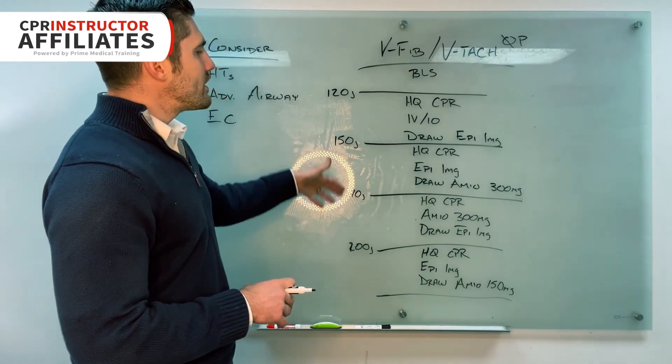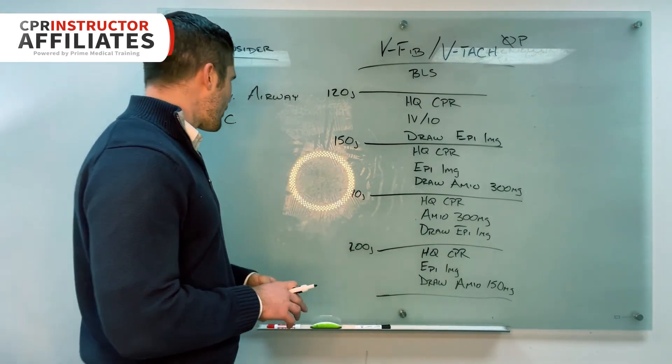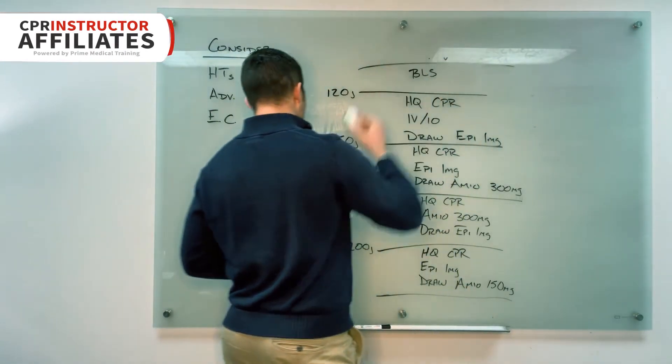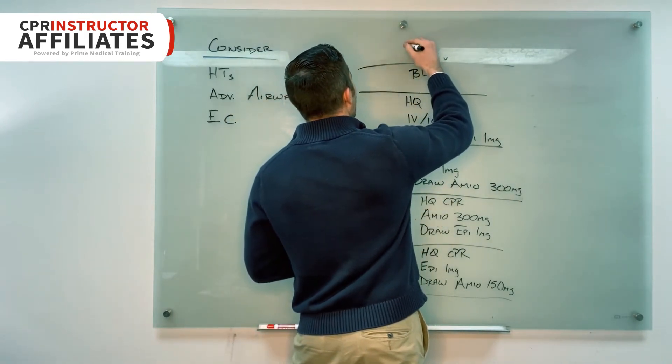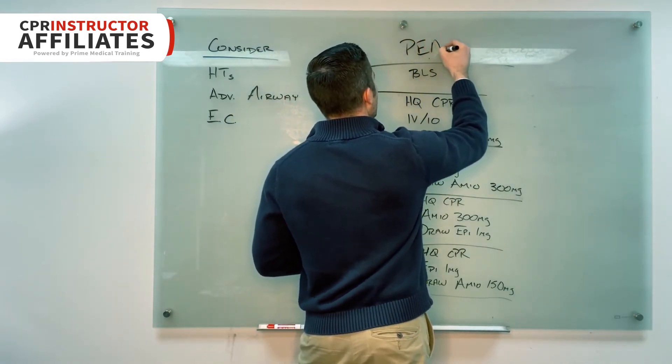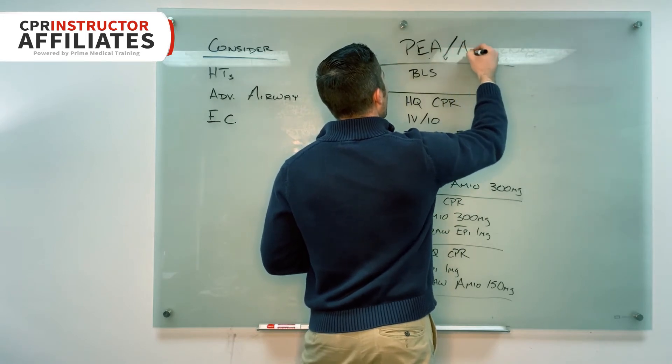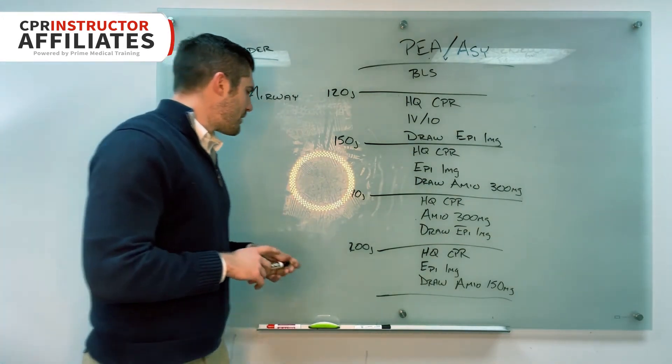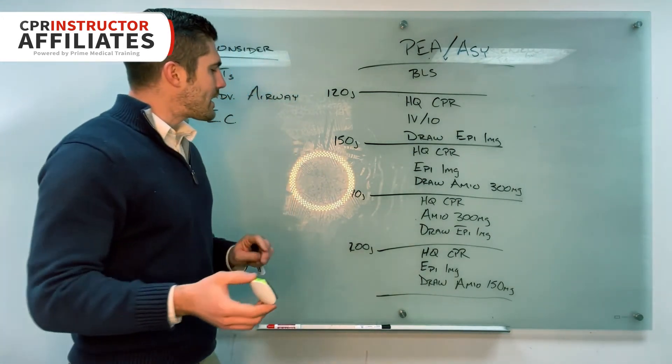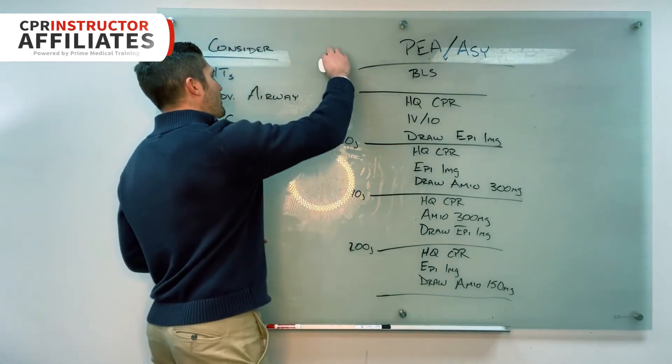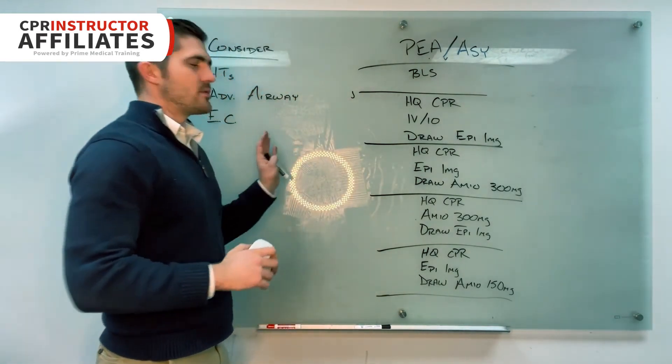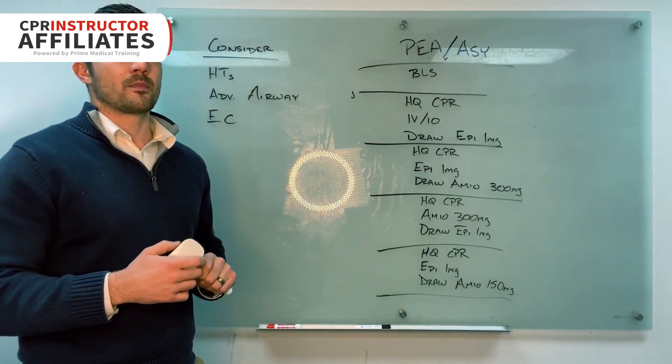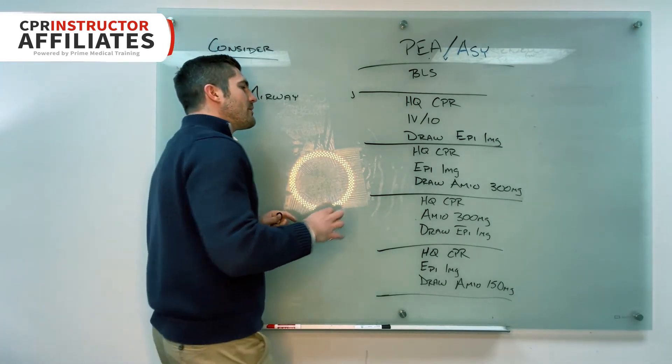So here it is, this is our VFib, VTac algorithm. But then I'll do something. I will take my eraser, go across the top, the title there. And I'd say, alright, now what happens, what changes when we go to PEA or asystole? This is what I want them to tell me. They're going to tell me that they're going to get rid of the shocks. Perfect. So all I have to do is one long stroke like that, get rid of all your shocks.